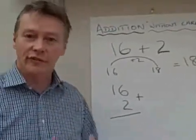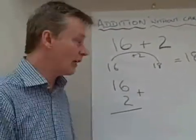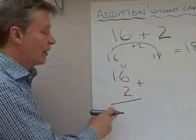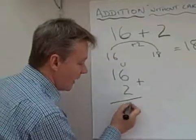And the way this works is that the first thing that we do is we add the units, and these are the units, 6 and 2. So 6 and 2 is 8,